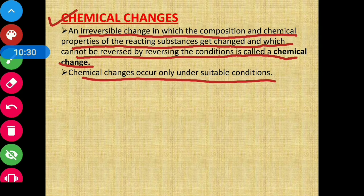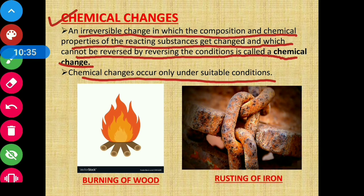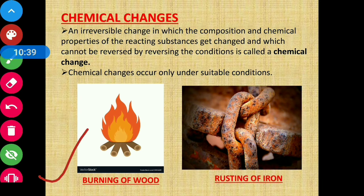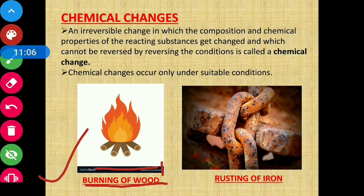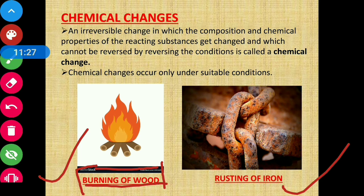Examples of chemical changes: burning of wood — when wood burns it gives a new product, that is ash and smoke. The chemical properties of this new substance are also changed, and by reversing conditions we cannot get wood back — so burning of wood is a chemical change. Similarly, rusting of iron — zang lag jaana — the rusted iron cannot be brought back to its original form by simple methods, so rusting of iron is also an example of a chemical change.